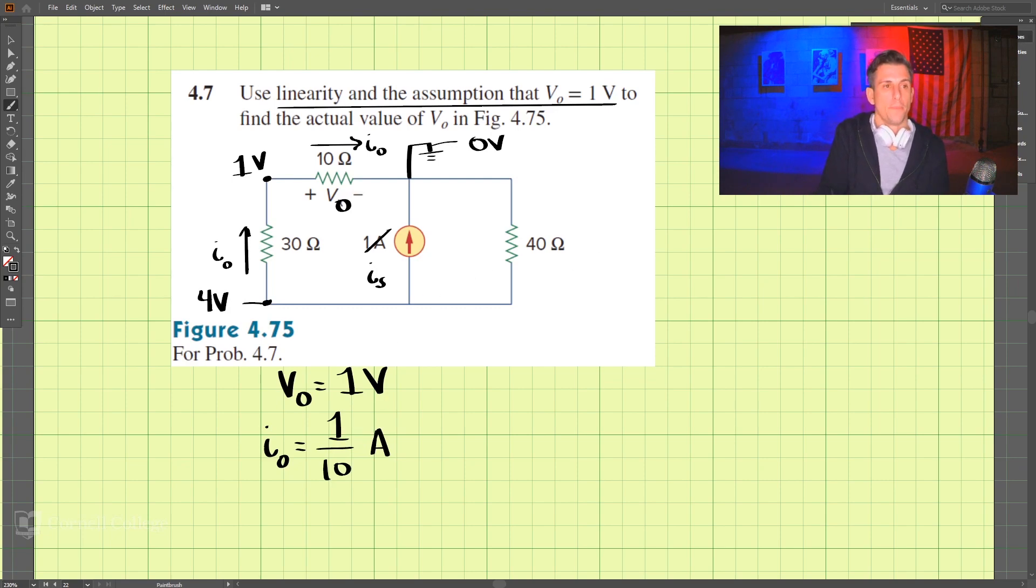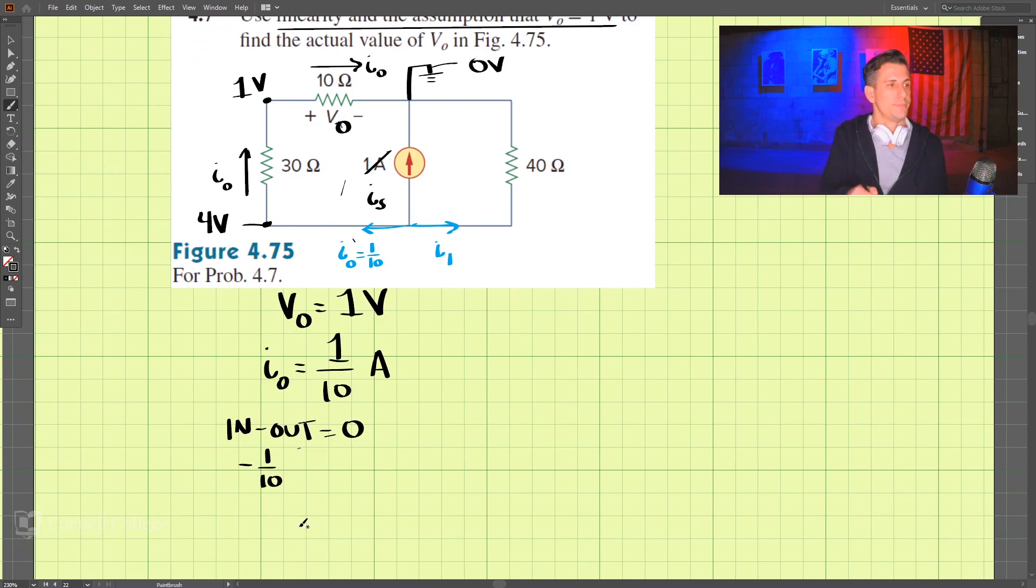So let's perform KCL on this node here. We'll call this I1, this is I0 which is 1 tenth, and then we have IS. So performing KCL, we're going to have in minus out equals 0. Coming in here, we have no values coming in. They're all going out. So we have negative 1 tenth minus IS minus I1 equals 0.